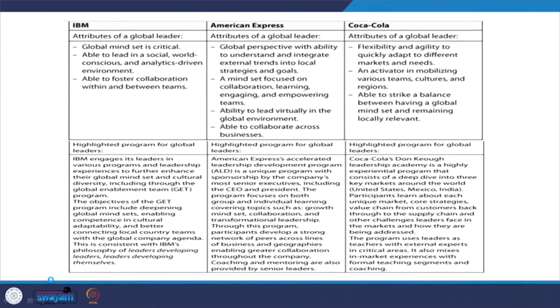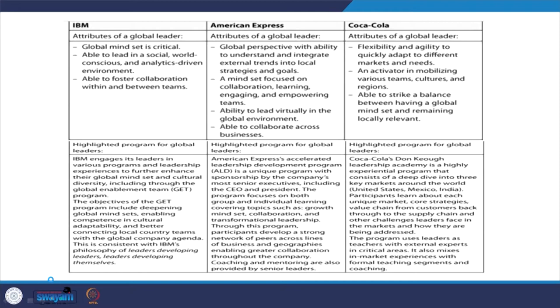Different companies are pursuing technology development and talent leadership development. The attributes of a global leader include a global mindset, which is critical because it keeps on changing. When developing knowledge workers, there are knowledge levels 1 through 5, and we always have to identify what is lacking through critical evaluation and critical analysis. Global mindsets are always critical — they are able to lead in a social, world-conscious, and analytics-driven environment.